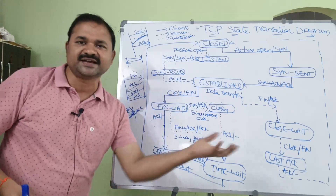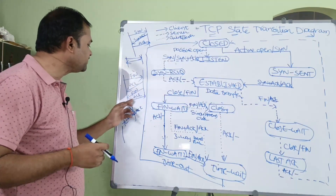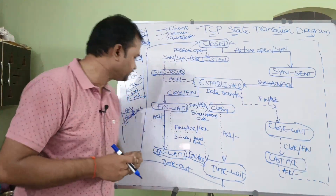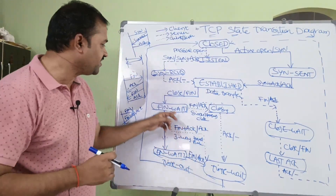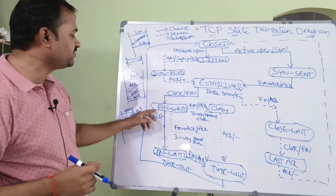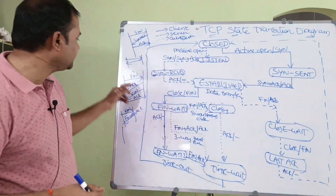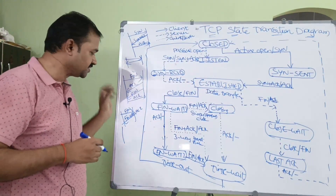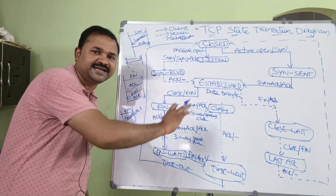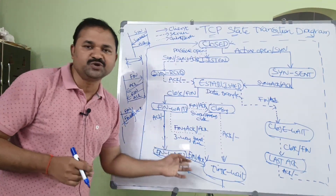If the server also wants to close its connection with the client, the server sends a FIN segment, and the client provides acknowledgement. After sending the FIN segment to the server — shown by a solid black line for client states — the client goes into the FIN-wait-1 state. There the client receives acknowledgement from the server and does not send any segment, so after receiving the acknowledgement it goes into FIN-wait-2.